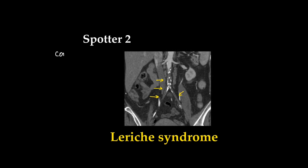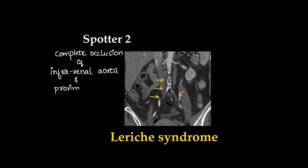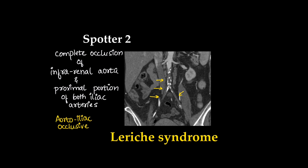The second spotter is Leriche syndrome. There is complete occlusion of the infrarenal aorta and the proximal portion of bilateral iliac arteries, also known as aorto-iliac occlusive disease, which is caused by atherosclerosis.